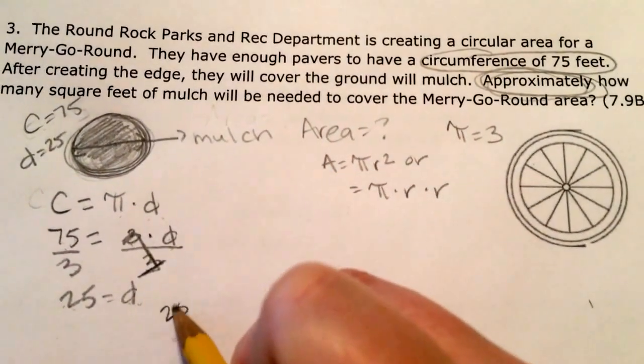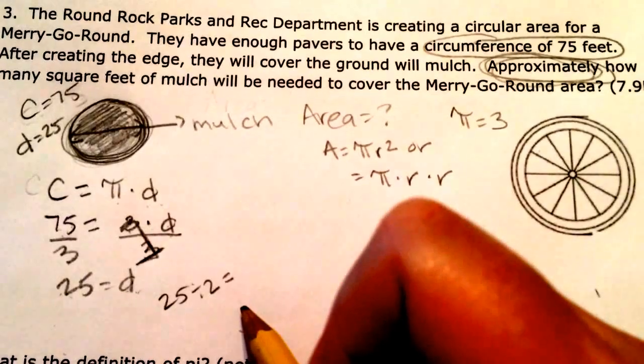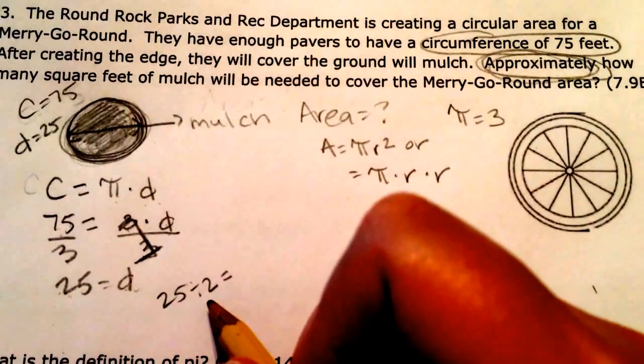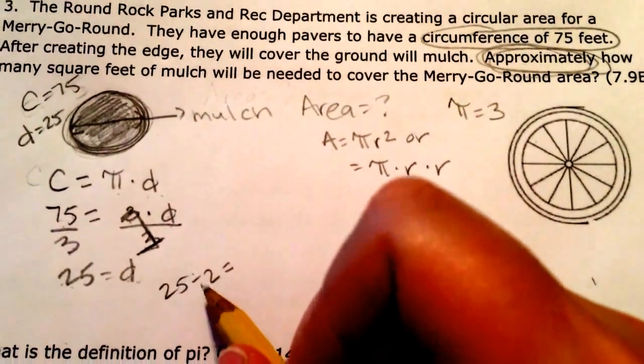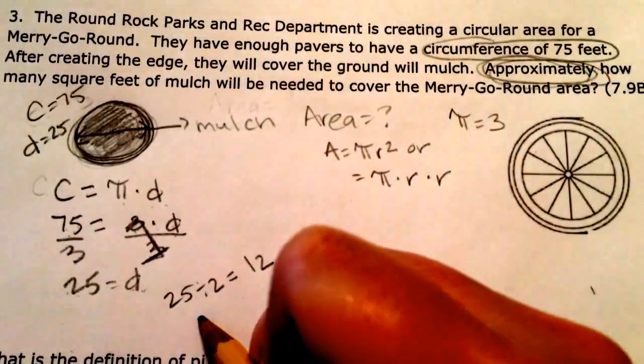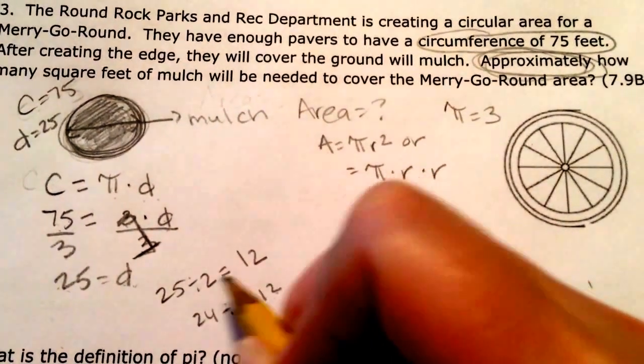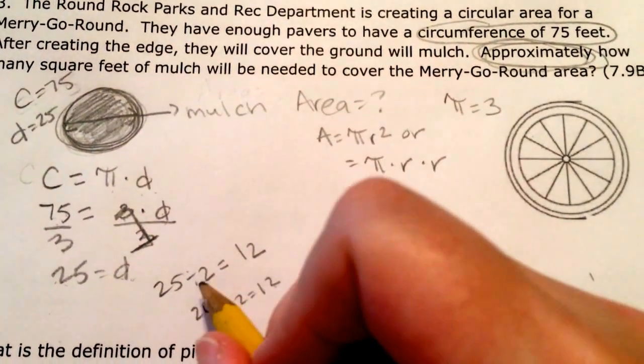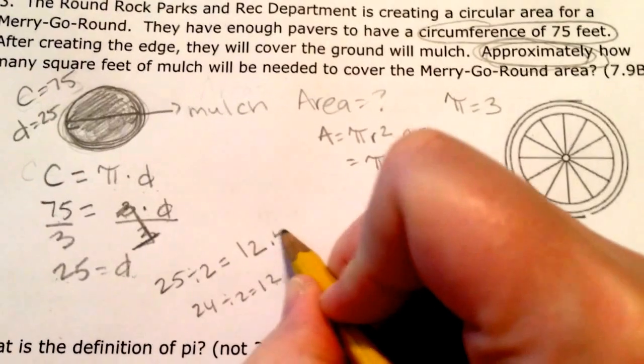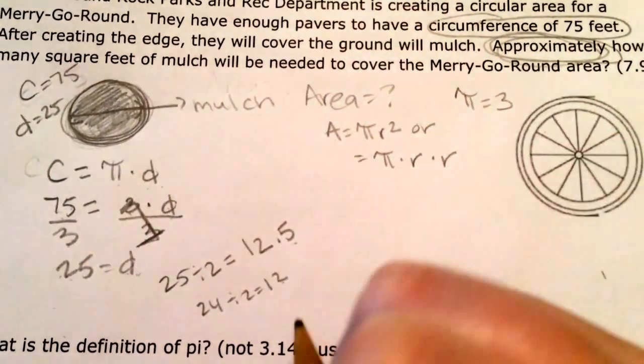So if I do 25 divided by 2, that's going to give me the radius. 25 divided by 2. Well, I know 24 divided by 2 is 12. That's 12, and that leaves me with $1 left. And $1 cut in half is 50 cents. So 12.5 is going to be my radius.